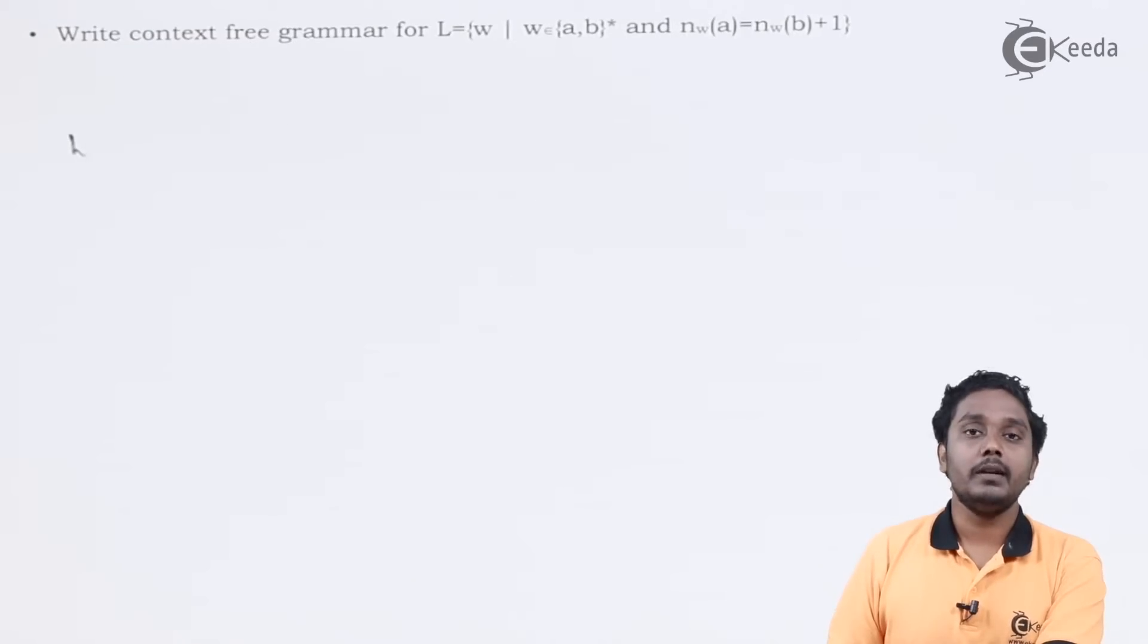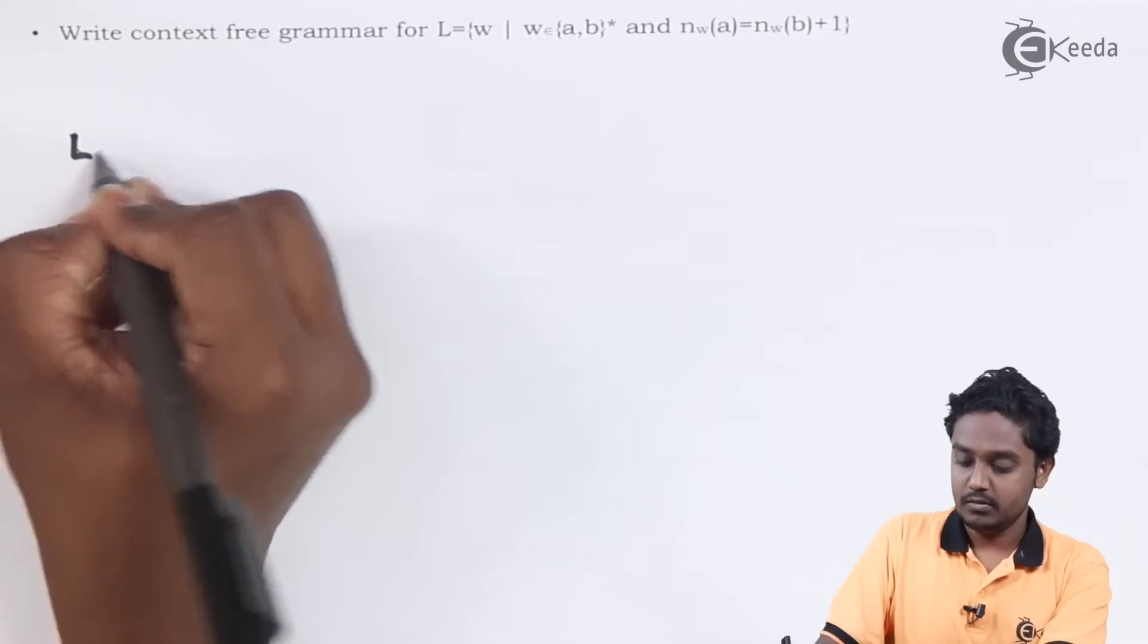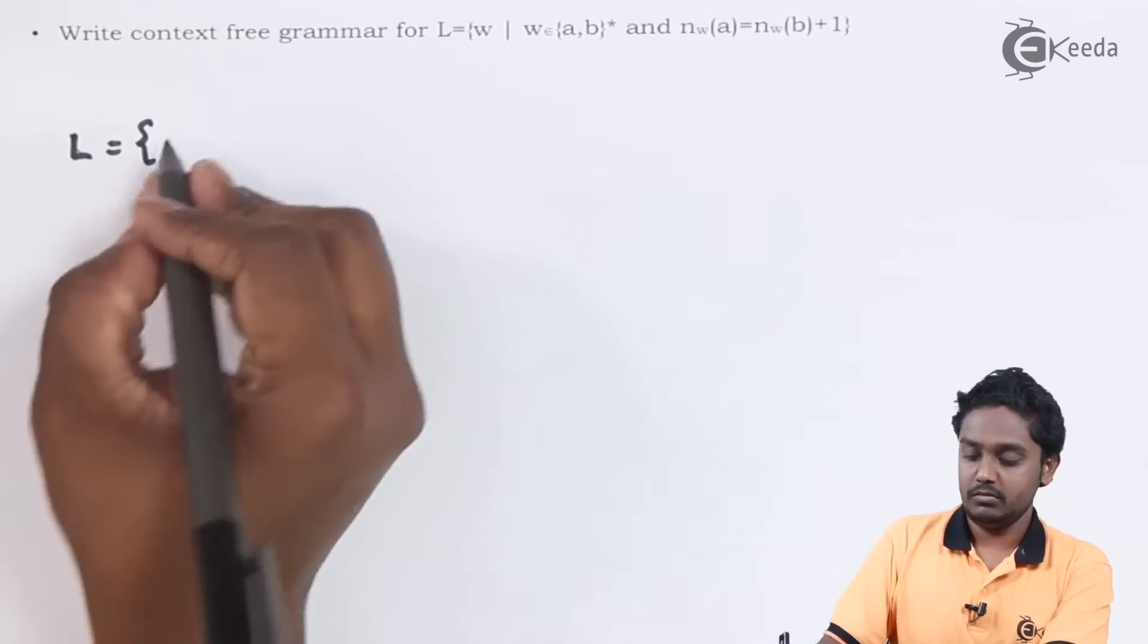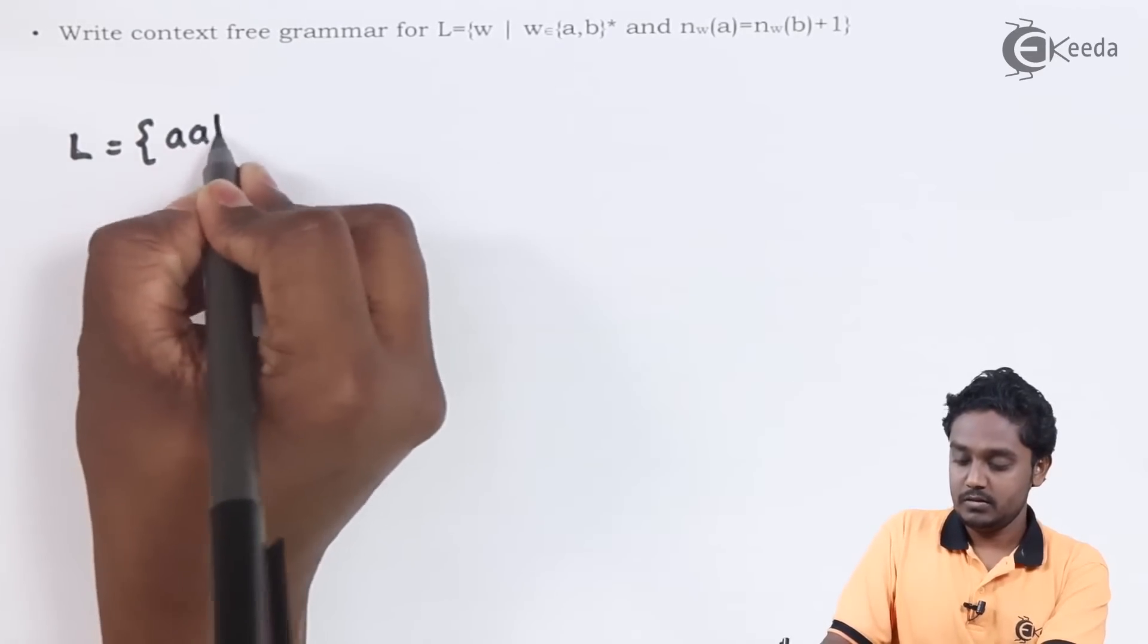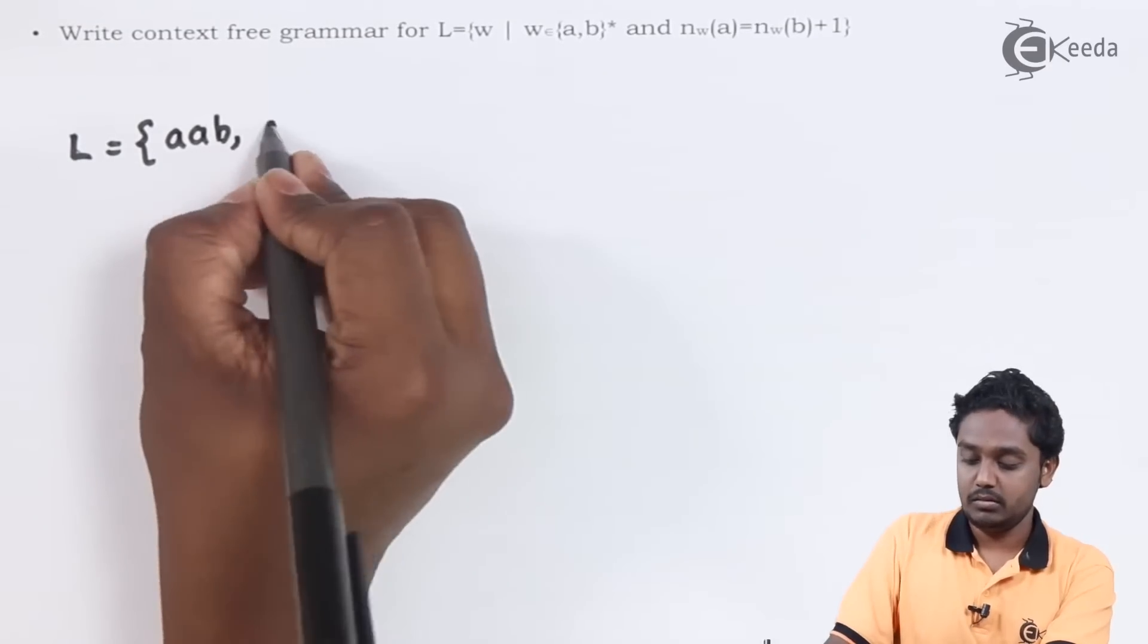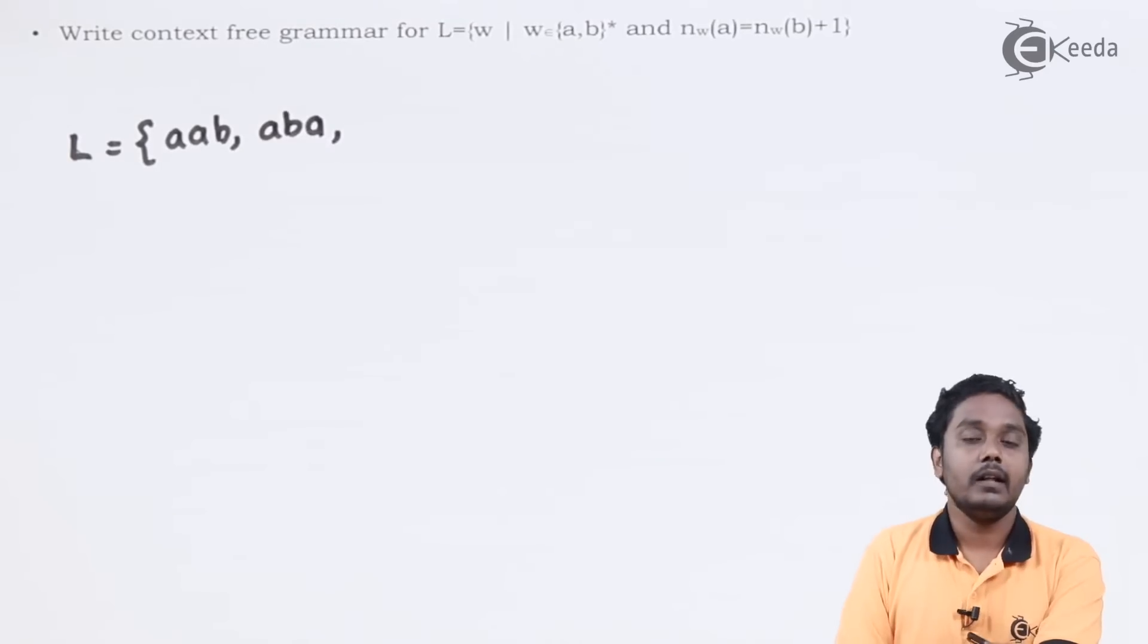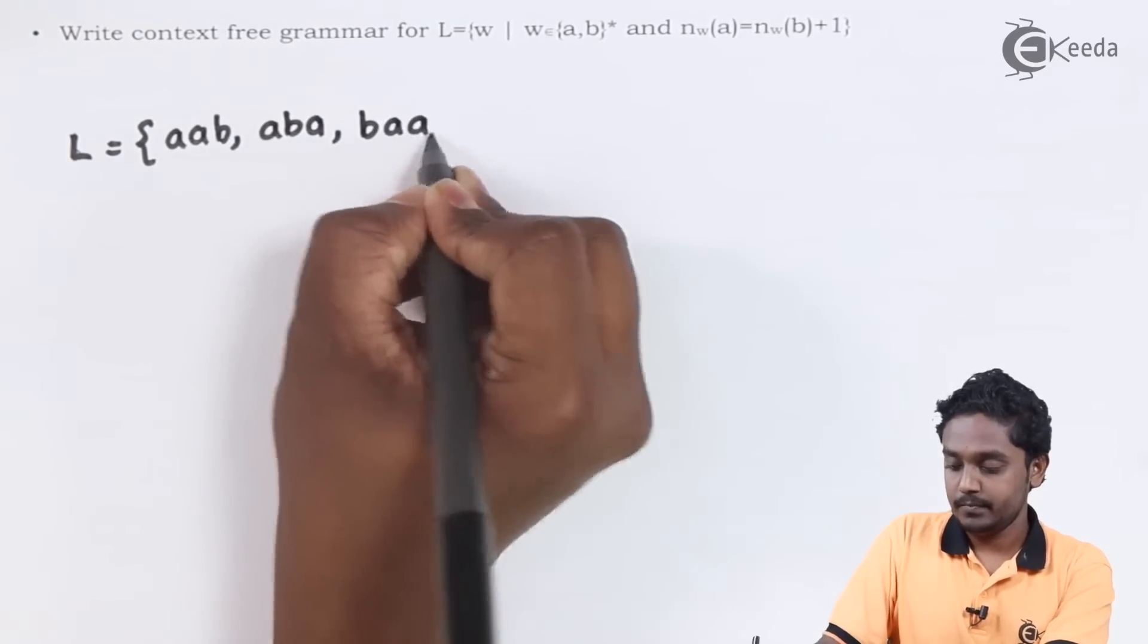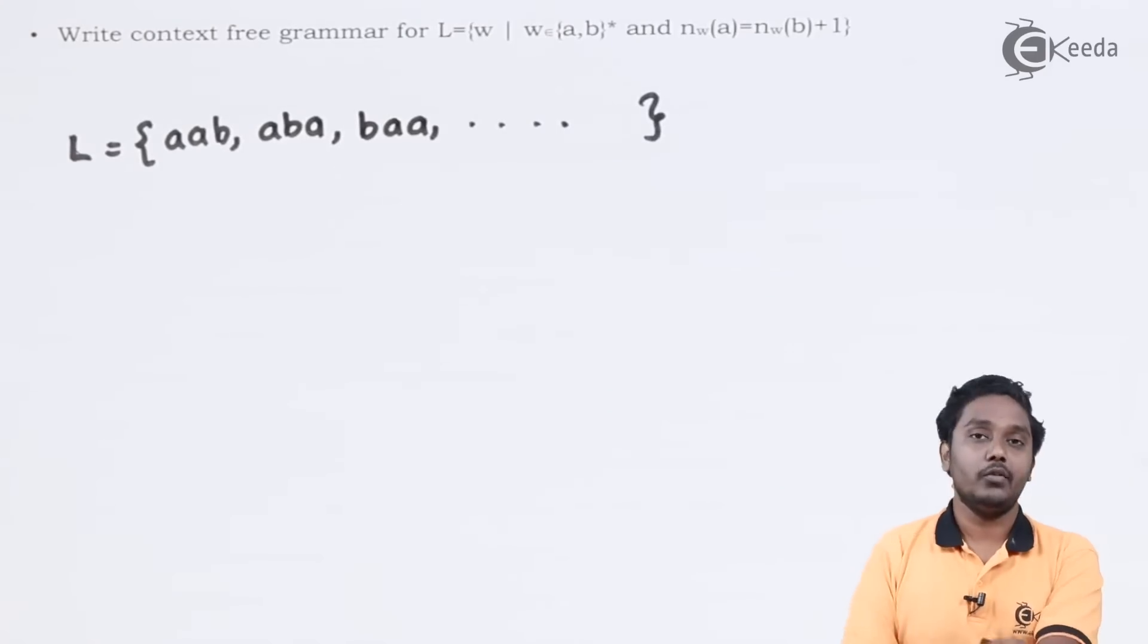The kind of strings which will be under this particular language would be AAB or ABA, BAA, and so on. Now let us try to draw the grammar for this particular language.